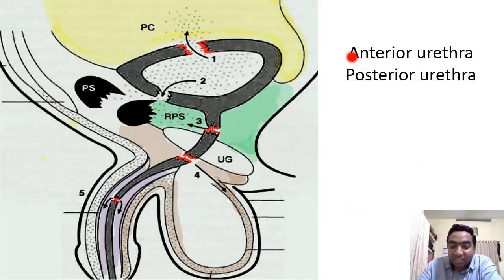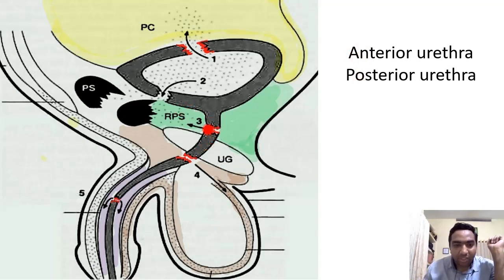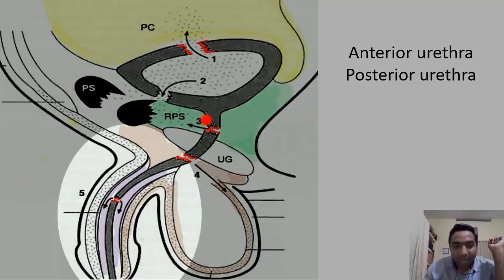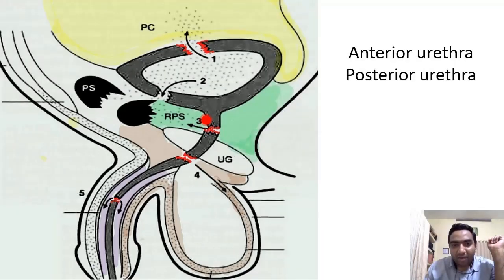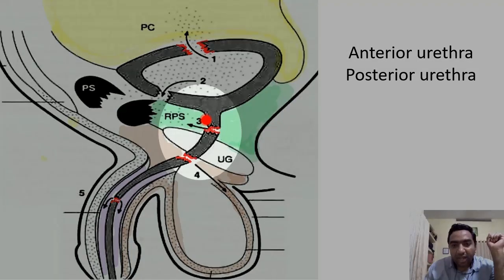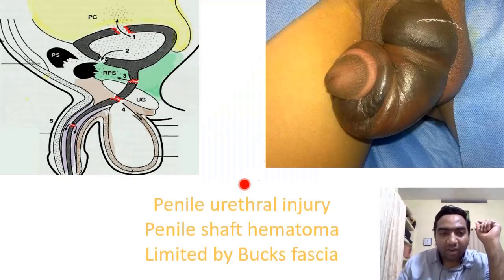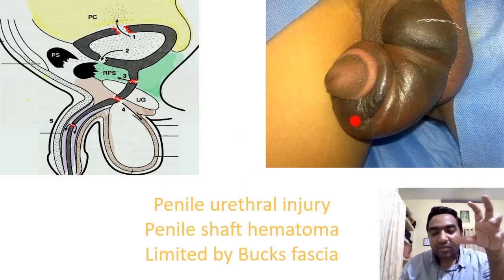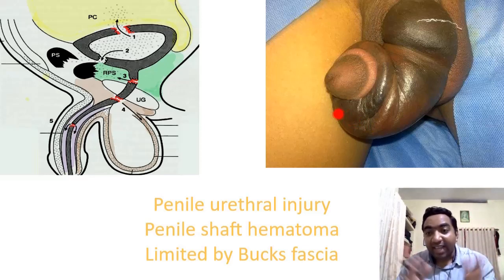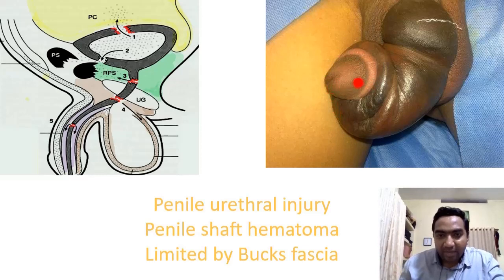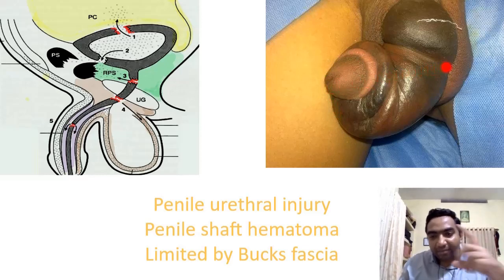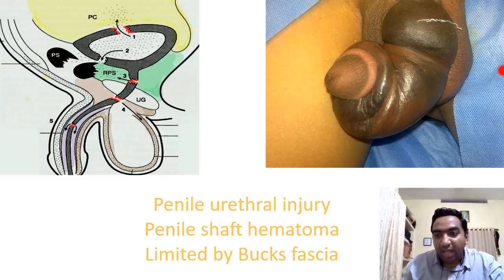We divide urethral rupture into anterior urethra and posterior urethra. The anterior urethra includes the penile urethra and the bulbar urethra, whereas the posterior urethra includes the membranous urethra and the prostatic urethra. When the injury is in the penile urethra, you can see a penile shaft hematoma. This penile shaft hematoma is prevented from extending anywhere by Buck's fascia of the penis, so the shape of the penis can be changed due to the hematoma.